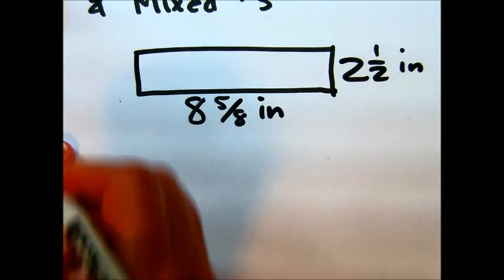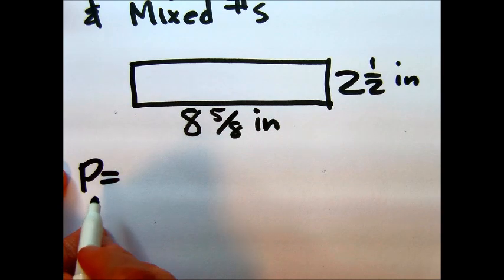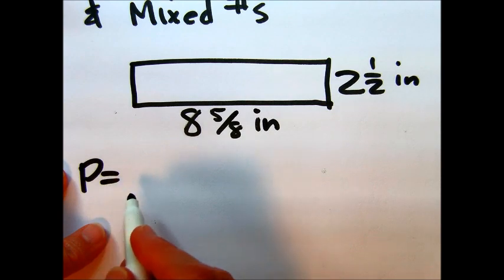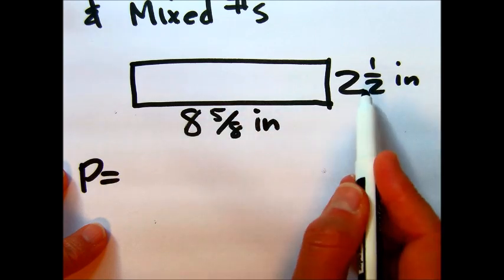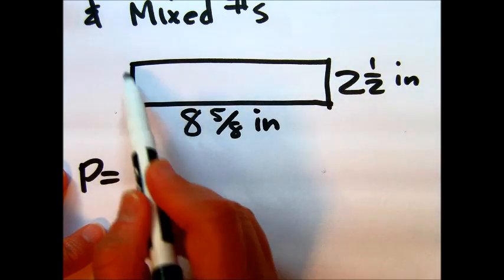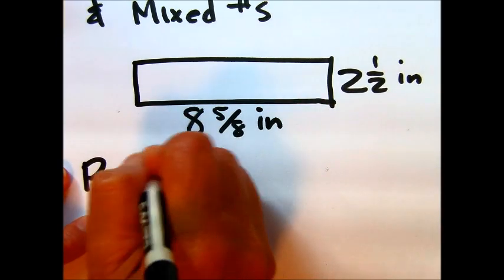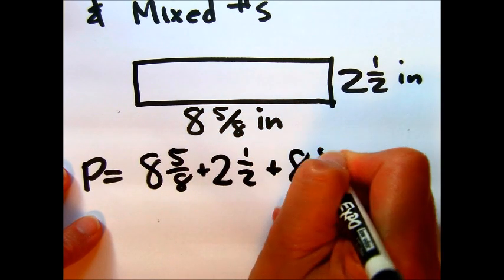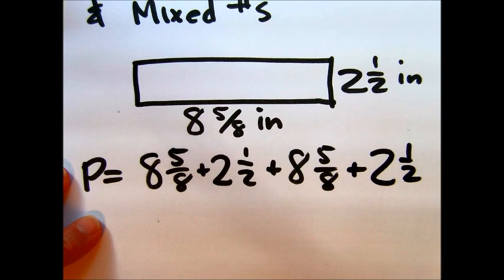Now there's a couple ways that you could work out perimeter of a rectangle. The longer way is to just add up the sides. Notice it's not just going to be 8 5/8 plus 2 1/2 because that's only going to reference two of the sides. We want to look at all four sides. So the left and right are going to be 2 1/2 and the top and the bottom will be 8 5/8. So we could just write it all out like this. I'll show you another way here in a minute.